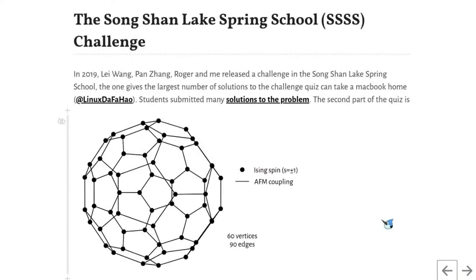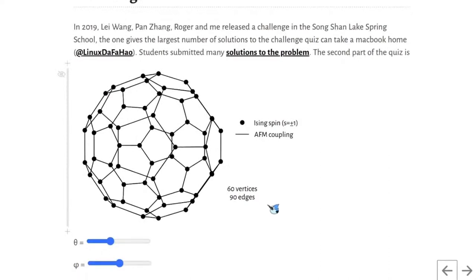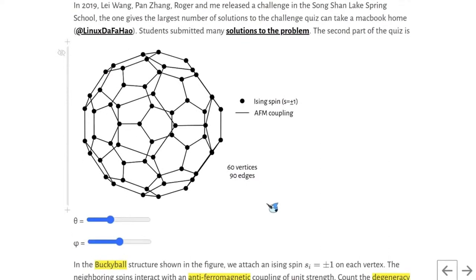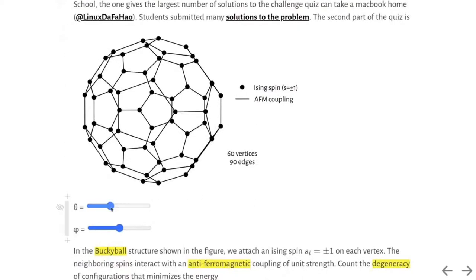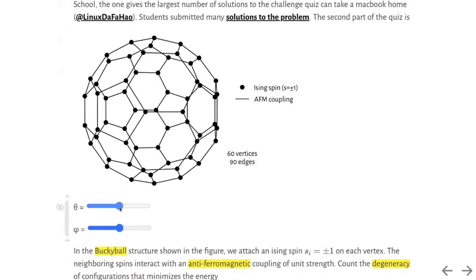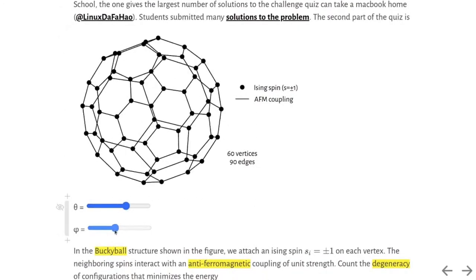Let's start from the Songshan Lake Spring School Challenge. This is a challenge about solving the spin glass problem defined on a buckyball structure. A buckyball structure has 60 vertices and 90 edges.